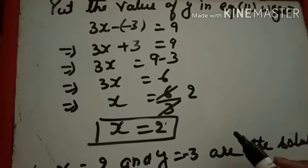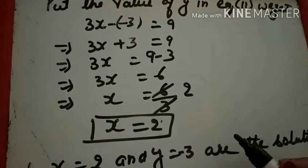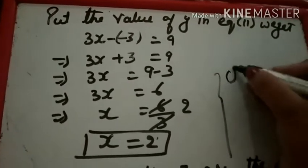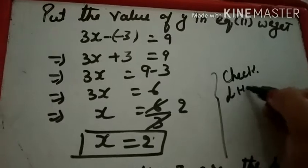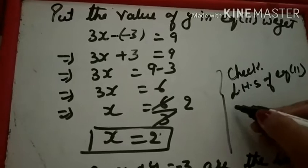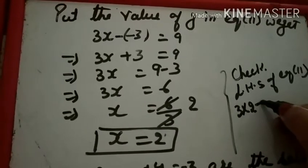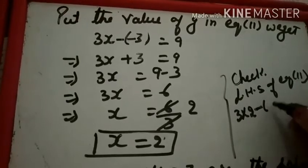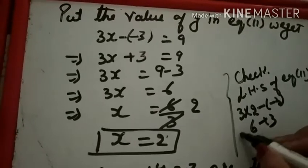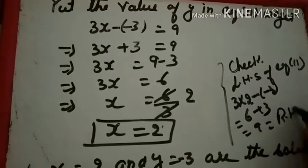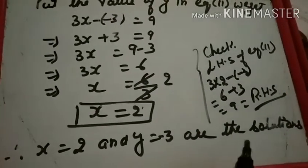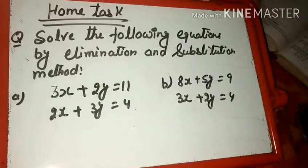Equations हैं: 3X + 4Y = −6 (First), 3X − Y = 9 (Second). X के coefficients already same हैं, to multiply करने की जरूरत नहीं। Sign change करो: plus to minus, minus to plus. Cut हो गया X। 4Y + Y = 5Y, and −6 − 9 = −15. Y = −15/5 = −3. Put Y = −3 in Equation Second: 3X − (−3) = 9, 3X + 3 = 9, 3X = 6, X = 2. So X = 2 and Y = −3 are the solutions.